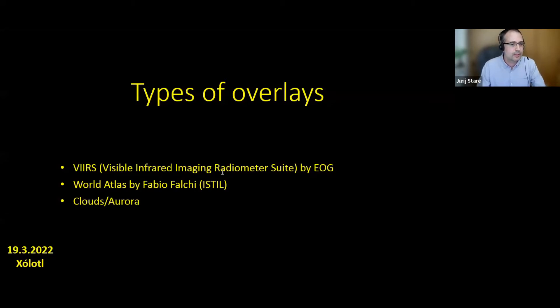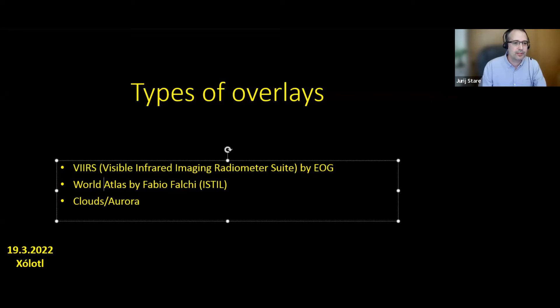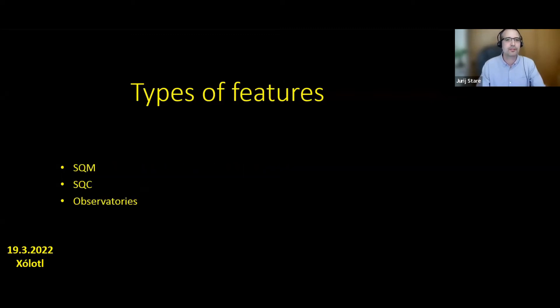I also have a cloud and aurora layer. These are not exactly light pollution layers, but they can help — if you want to measure sky darkness you want to avoid aurora and of course clouds. The map also contains additional features: SQM, SQC, and observatories. SQM features are basically sky brightness readings that users have submitted to the map, displayed for other users to see — users are sharing their information about how a certain location looks.